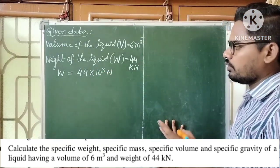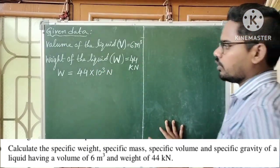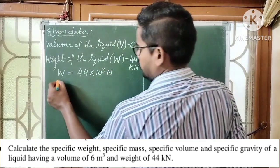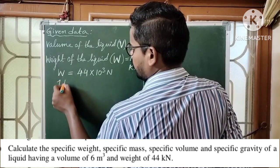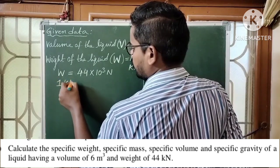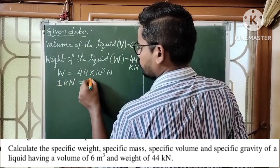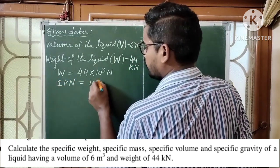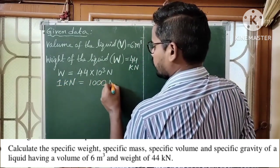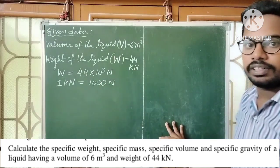1 kilonewton is equal to 1000 newtons — unit conversion.